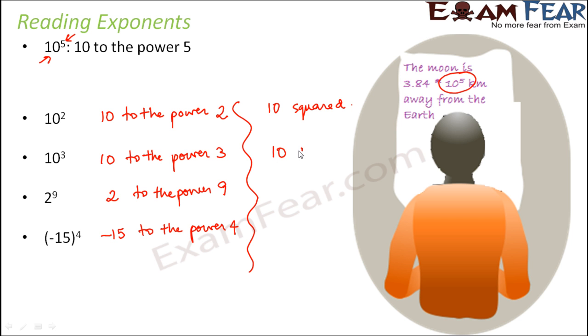Similarly, when you have three 10s, we say that 10 cubed. Why cubed? You remember? How does a cube look like? So a cube is that figure which has length, breadth and height equal. So all the three dimensions are equal.